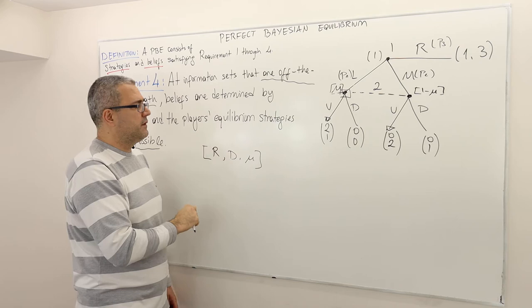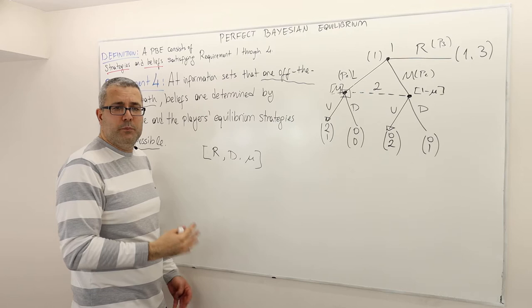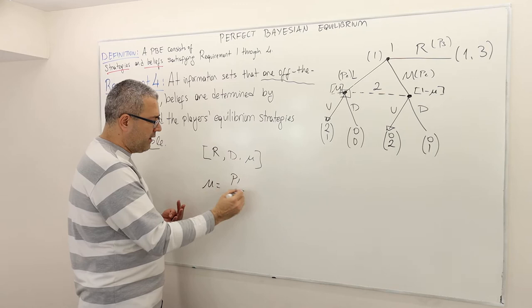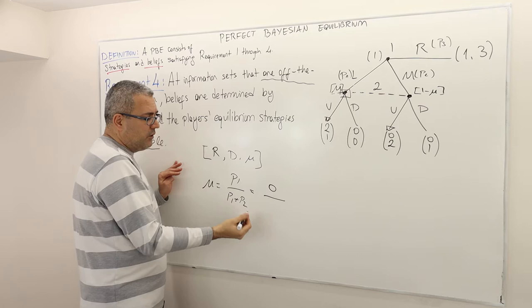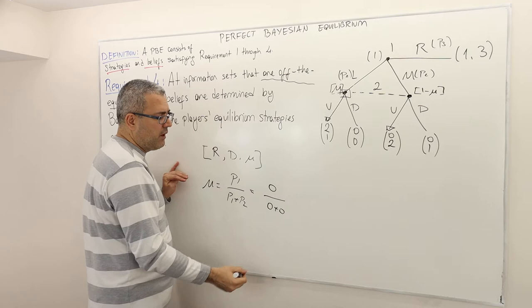The question is: what should be the value of mu? Well, let's try to use Bayes' rule like we did in requirement three. Remember, mu equals P1 divided by (P1 plus P2). However, P1 is zero because the likelihood that player one plays L is zero, and the likelihood of playing M is also zero. So we get zero divided by zero, which is undefined.